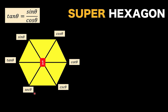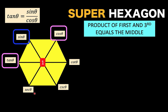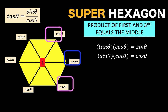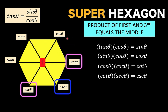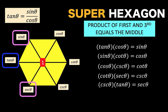We now have 12 identities. Let's add more. This time, take three consecutive functions in the hexagon and multiply the first and the third — the product is the function in the middle. So tangent theta times cosine theta equals sine theta. Sine theta times cotangent theta equals cosine theta. Cosine times cosecant gives cotangent. Continuing this process gives another six identities, bringing our total to 18 generated without memorizing any of them.